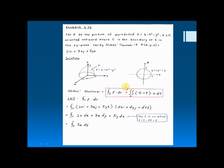Then we use this formula as we have mentioned before. After that, you have to divide it into the left-hand side and the right-hand side. We calculate the left-hand side using the line integral formula: the integral over C of F·dr, which is given as (x)i + 2y²j + 2y²k, and dr is dx·i + dy·j + dz·k.